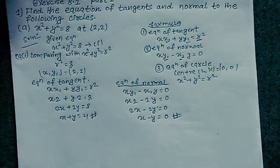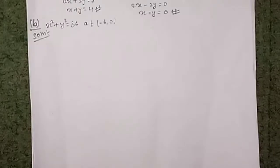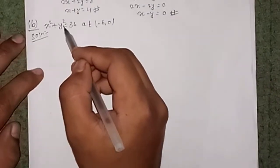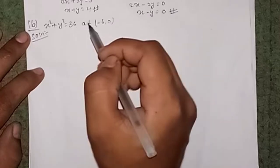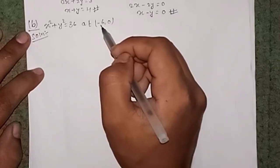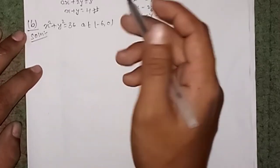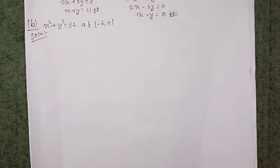Now we do parts b, c, d. For the second question: x² + y² = 36, at point (-6, 0). We need to find the tangent and normal.